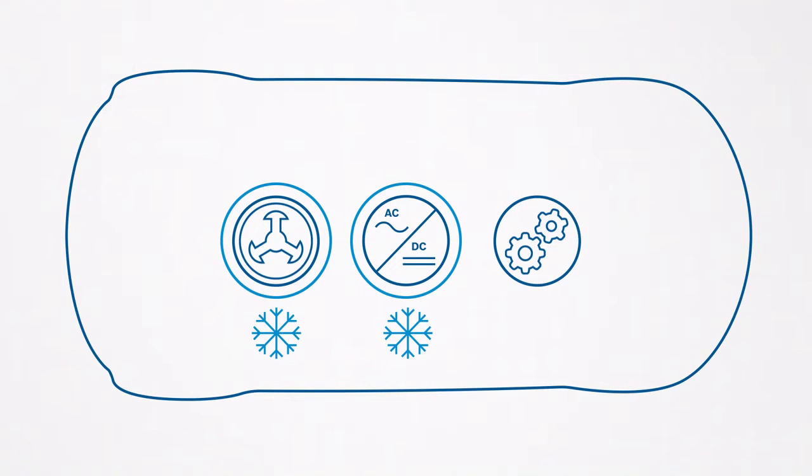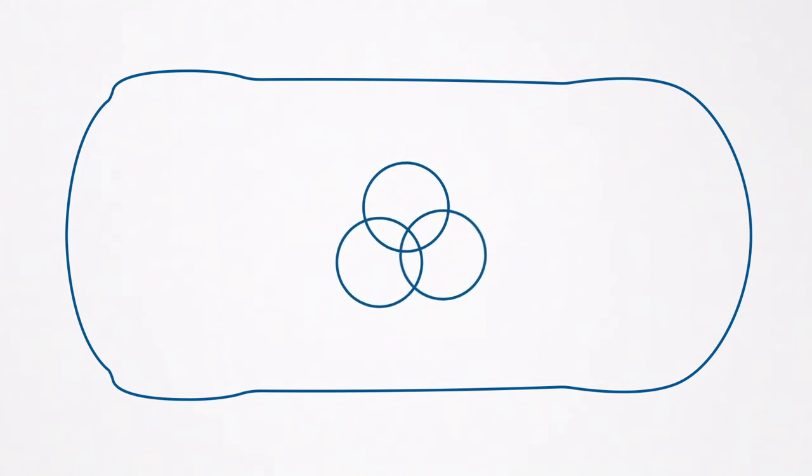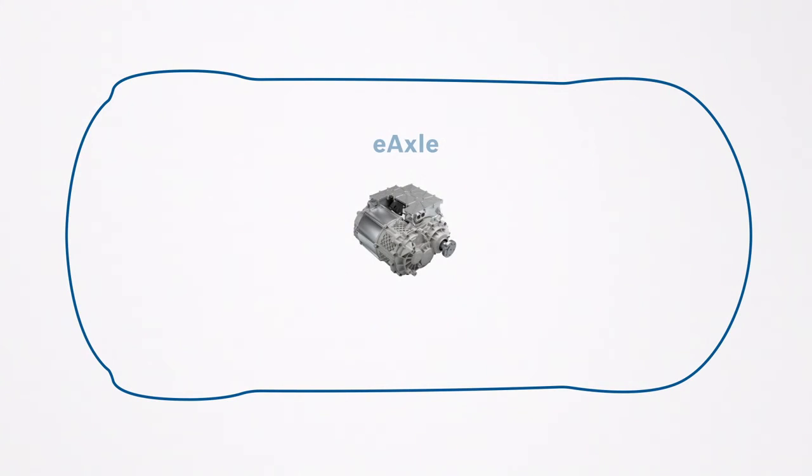For more efficiency, Bosch combines these three components into one compact and cost-effective system, the so-called E-Axle.